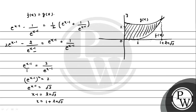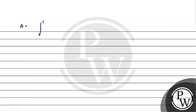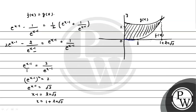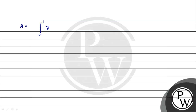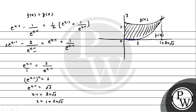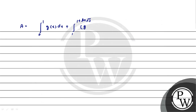So now we have to calculate the area. We integrate from 0 to 1 where g(x) is above, and from 1 to (1 + ln√3) where g(x) is above f(x). Area A = ∫(0 to 1) [g(x) - f(x)] dx + ∫(1 to 1+ln√3) [g(x) - f(x)] dx.